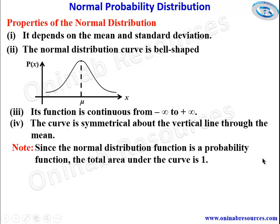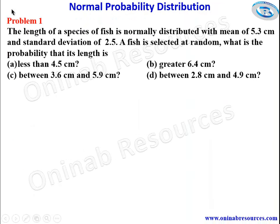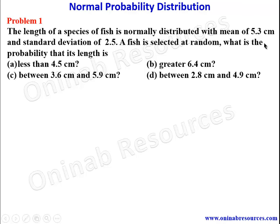We then go ahead to solve problems. Problem 1: The length of a species of fish is normally distributed with a mean of 5.30 centimeters and standard deviation of 2.5. A fish is selected at random. What is the probability that its length is: (a) less than 4.5 cm, (b) greater than 6.4 cm, (c) between 3.5 cm and 5.9 cm, and (d) between 2.5 cm and 4.9 cm?